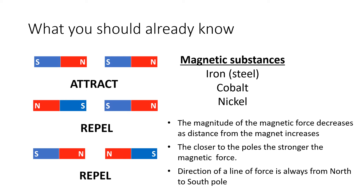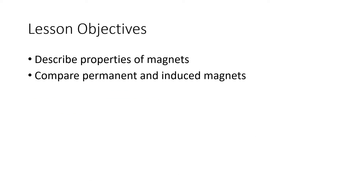Just to help you along, here's a little summary. You do need to know the terms attract and repel. Opposite poles — north and south — will attract, while like poles — south and south, north and north — will repel. Magnetic substances include iron, cobalt, and nickel. You can also mention steel, which is an alloy made up of more than one metal including iron. The magnitude of a magnetic force decreases as you move further from the magnet, and closer to the poles, magnetic field lines are closer together so the force is stronger.